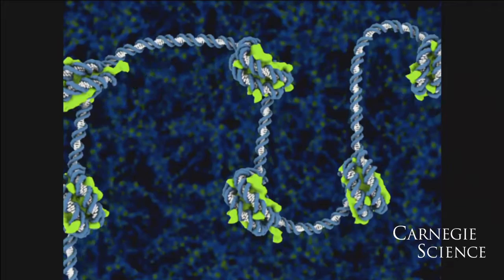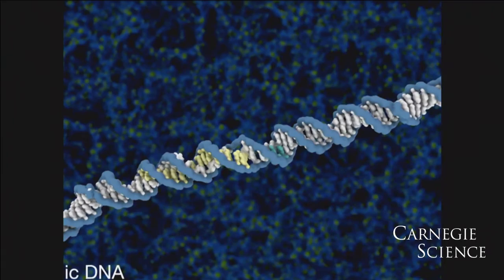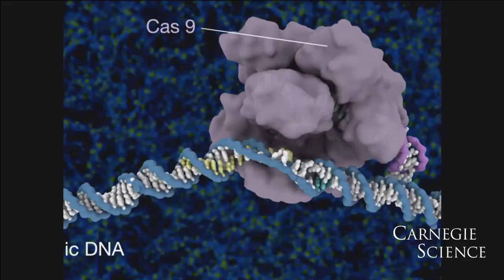Somehow, this bacterial enzyme Cas9, with its guide RNA, has to search through all of the DNA of the cell to find a single sequence that matches the sequence of the guide RNA.